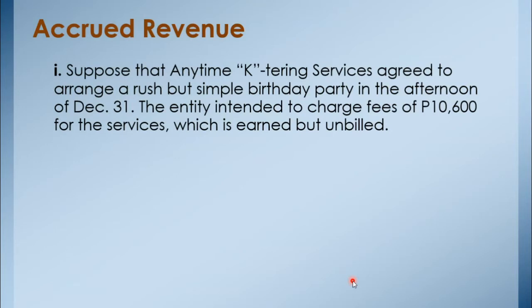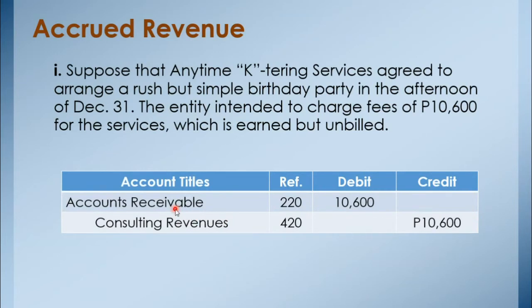Suppose that Anytime Catering Services agreed to arrange a simple birthday party in the afternoon of December 31. The entity intended to charge fees of 10,600 pesos for the services, which are earned but unbilled — meaning the service has already been performed but the customer has not yet paid. The journal entry would be: debit Accounts Receivable 10,600 and credit Consulting Revenues 10,600.